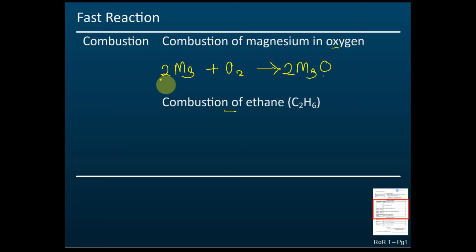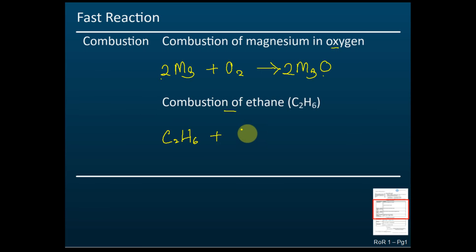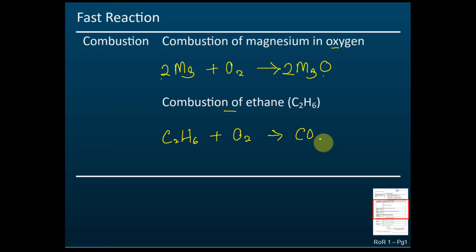Now, how about combustion of ethane? Ethane is C₂H₆. All combustions need oxygen, so we add O₂. The products of combustion of a carbon compound are carbon dioxide and water.